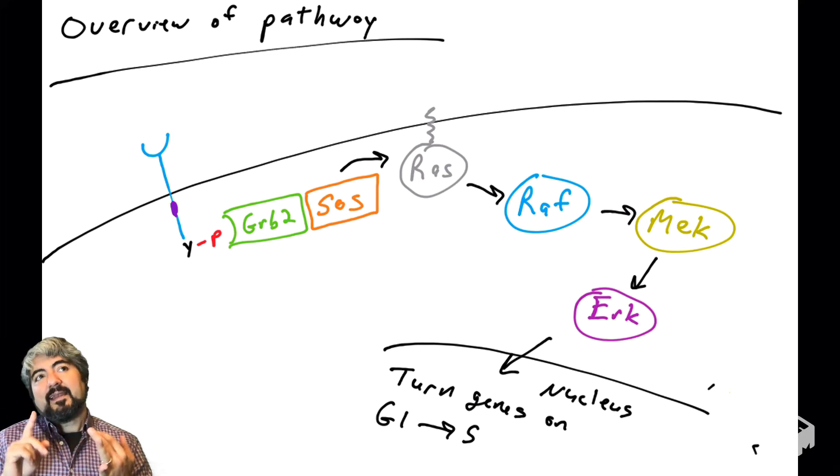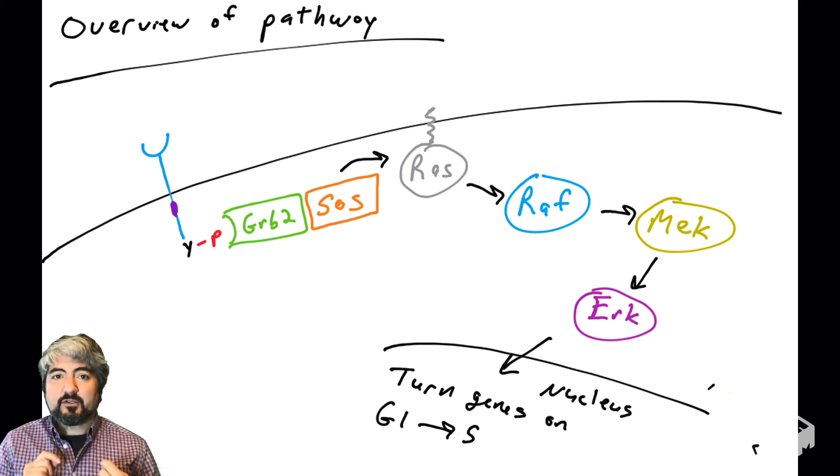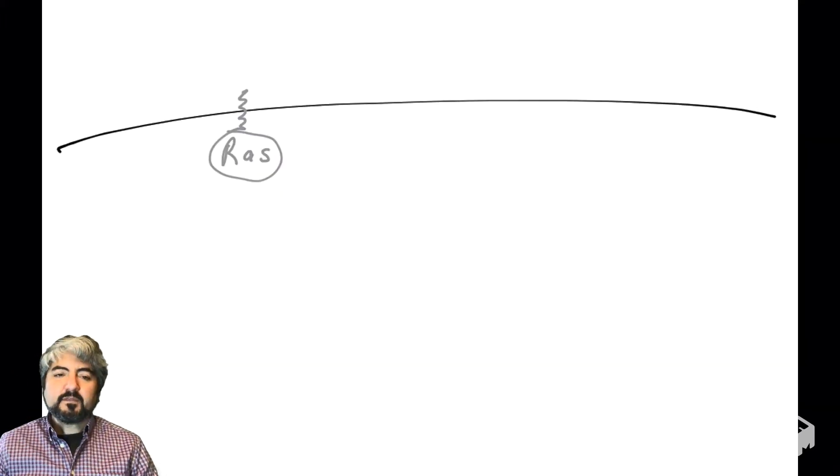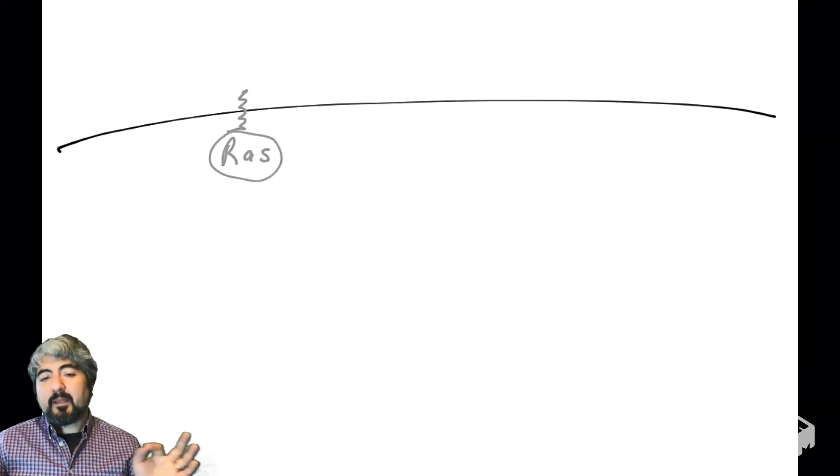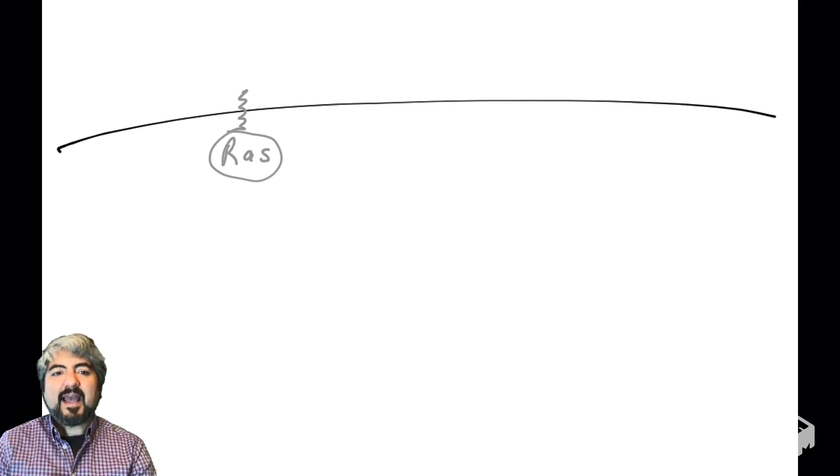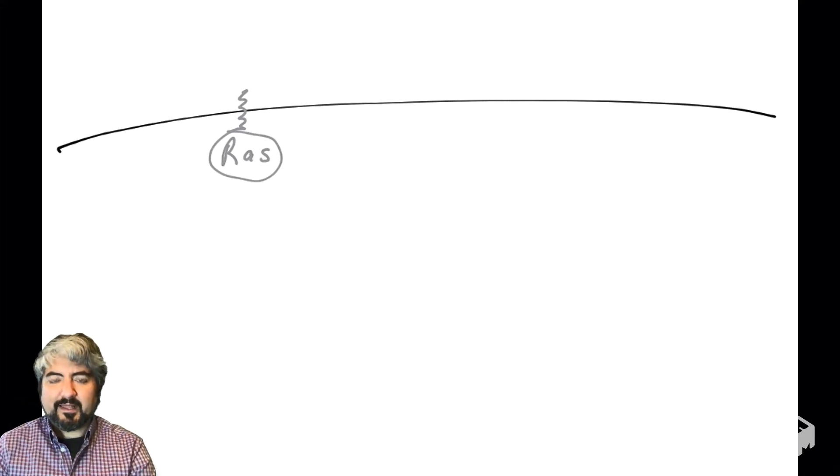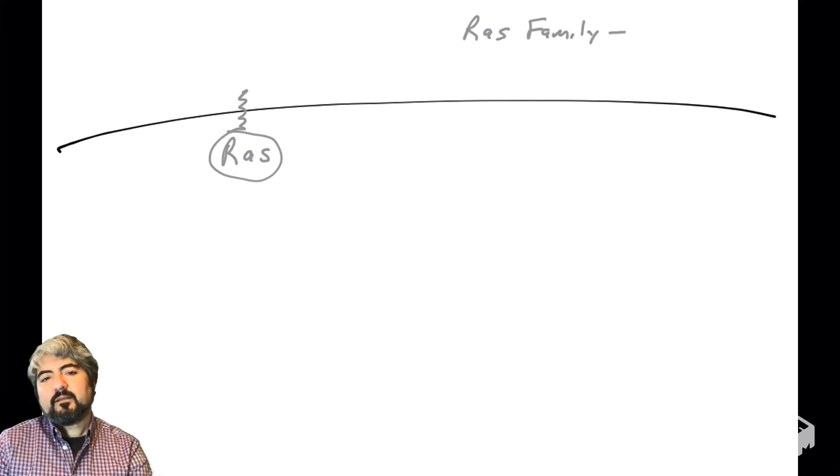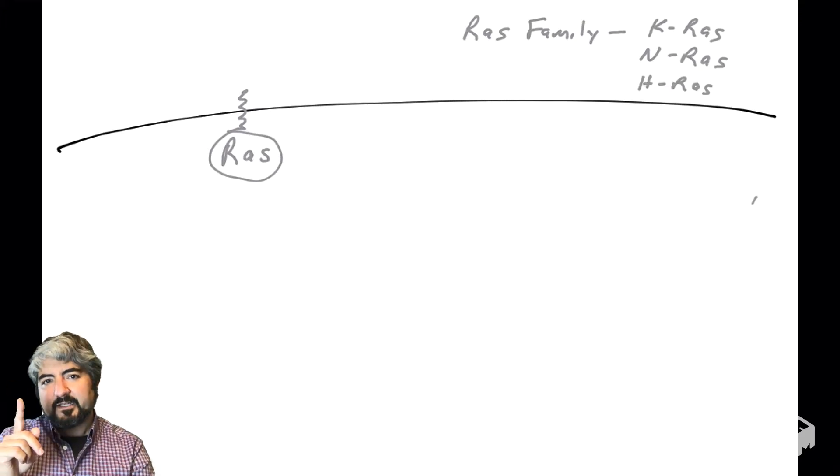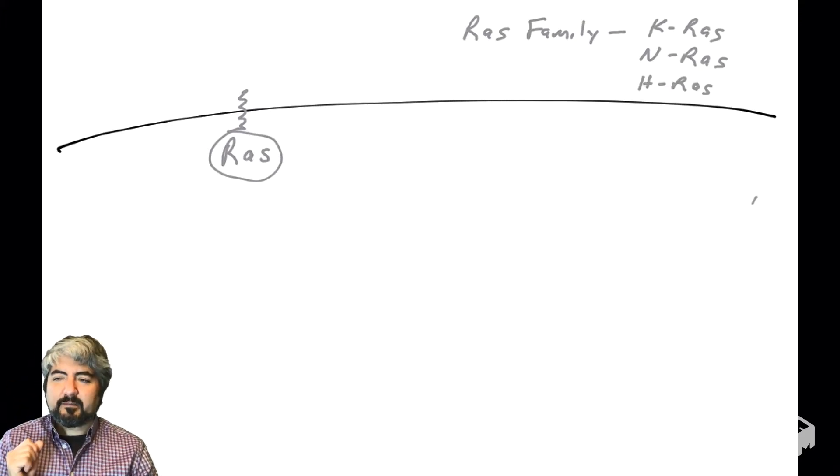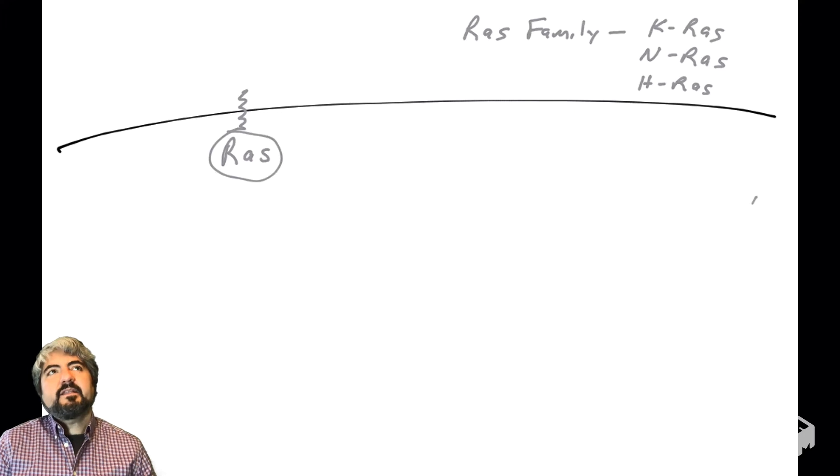I've drawn a plasma membrane here with the RAS protein, and it's got this little squiggle on it. What is that squiggle? Well, before I get to the squiggle, I need to tell you some facts about RAS.